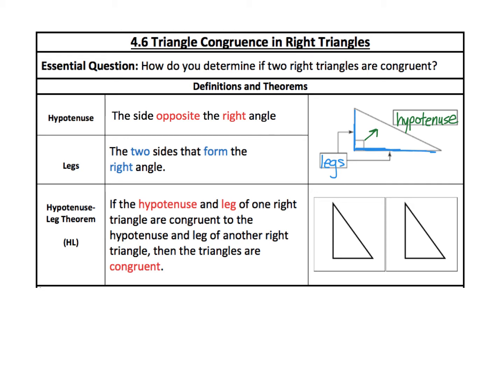The Hypotenuse-Leg theorem tells us that if the hypotenuse and leg of one right triangle are congruent to the hypotenuse and leg of another right triangle, then the triangles are congruent.